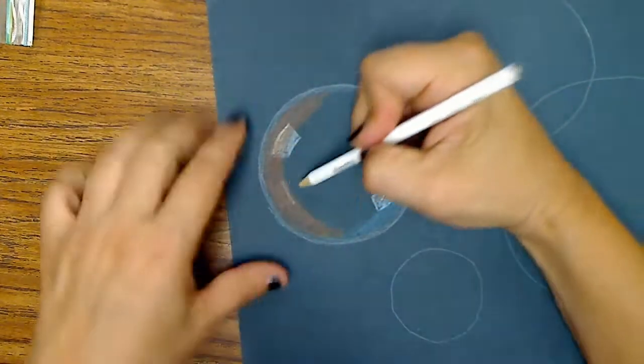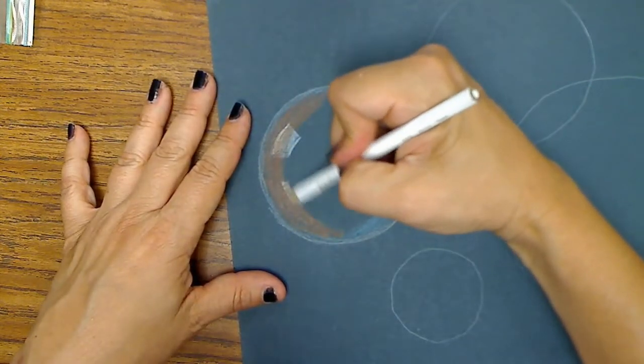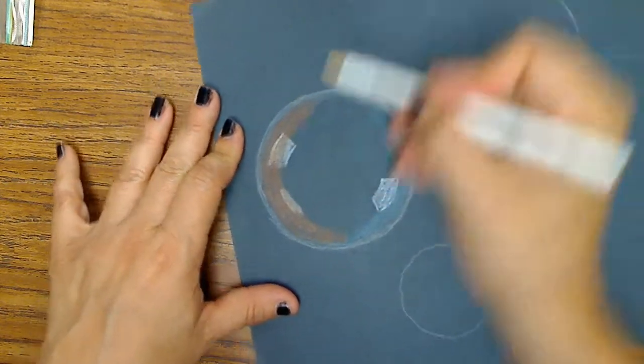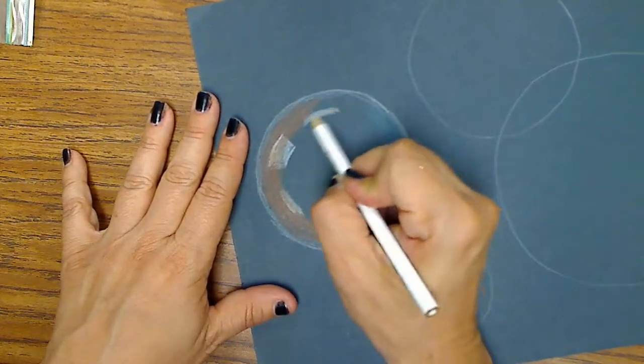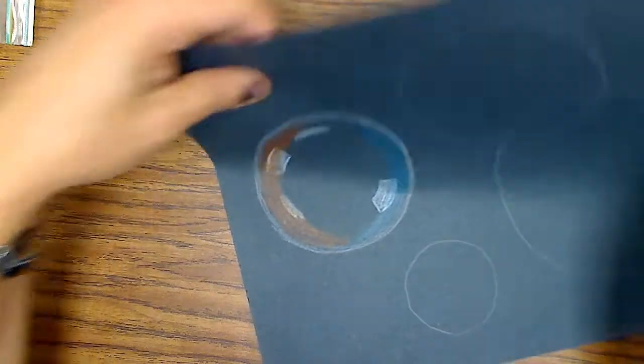Again we're going to leave the center part clear for now, which is actually black. But you can add some other little highlights around, and notice that no matter where I am I'm following the shape of that curve of the bubble.